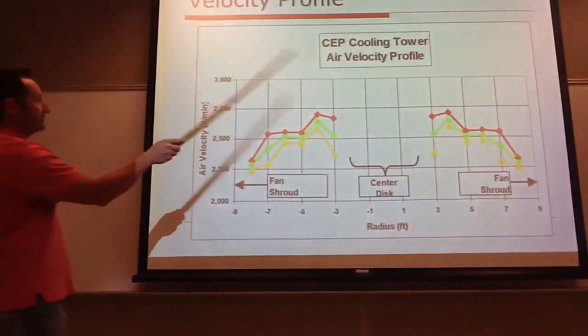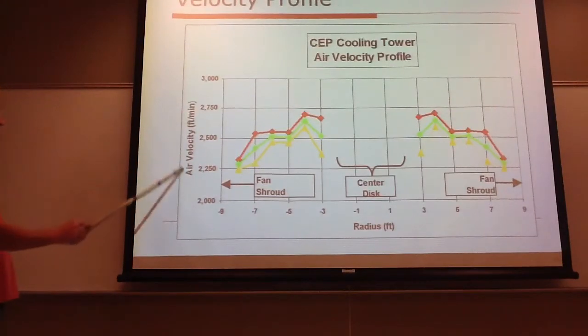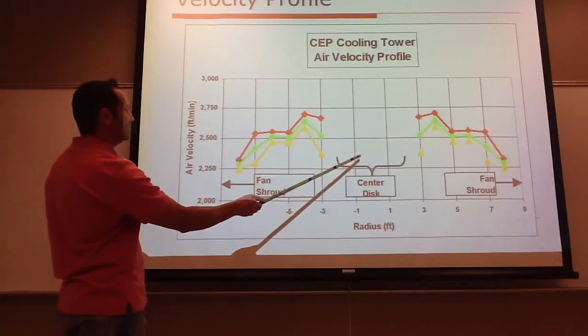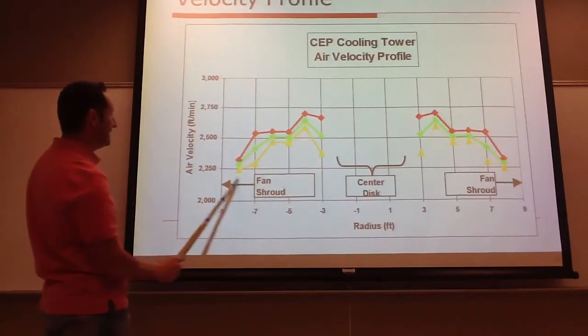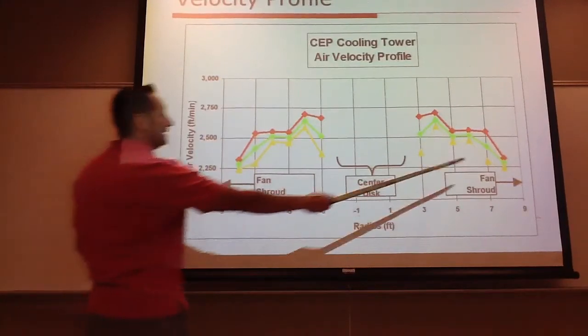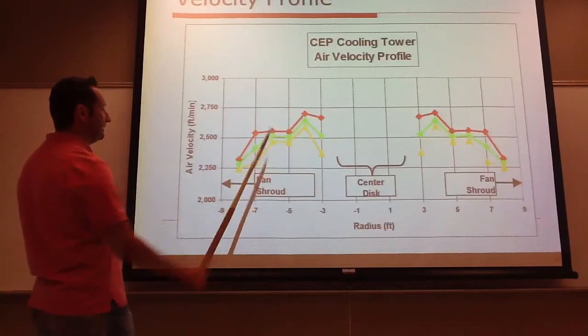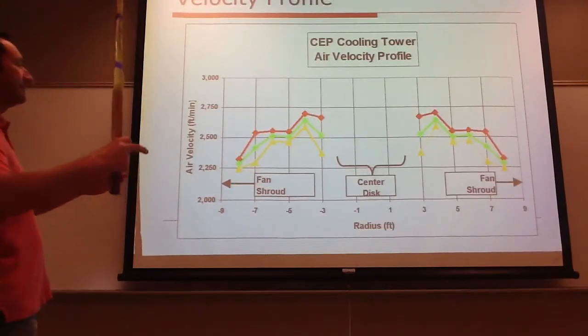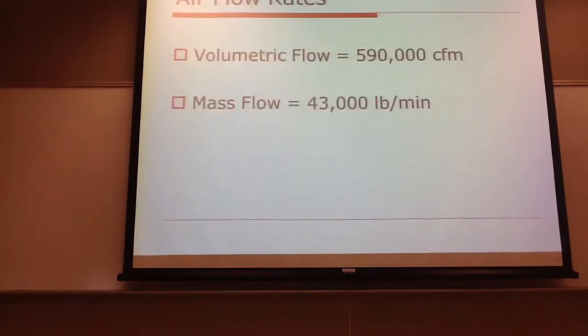And then this is a graphical formula of the cooling tower profile. So you've got the air velocity in feet per minute, and you've got the radius, and you can see in the center, there's no data because it's not really doing anything right there. And then the fan shroud is over here and on this side, and it kind of goes up in feet per minute as you get closer. So the inner areas, as it goes further out, it's a little bit smaller, not much though.